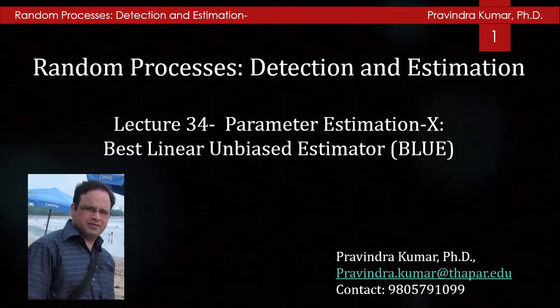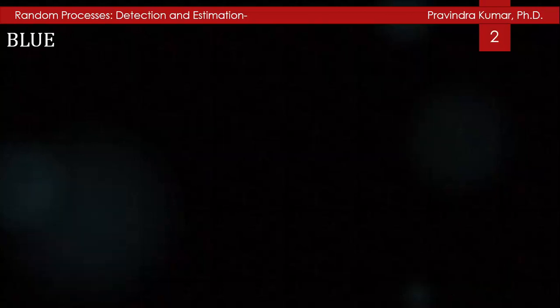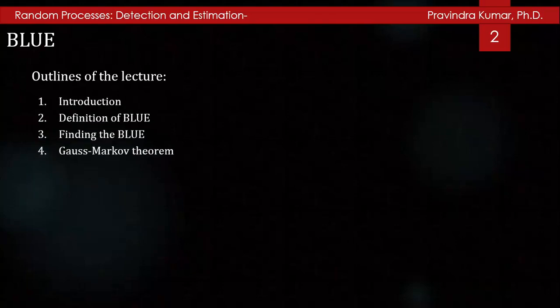Welcome to the lecture series of Random Processes, Detection and Estimation. This is the 34th lecture of this series. In the previous lecture, we discussed the Rao-Blackwell-Lehmann-Scheffe theorem and Neyman-Fisher factorization theorem with vector parameters to find MVU. In this lecture, we will discuss the best linear unbiased estimator (BLUE), and the outline includes: definition of BLUE, finding the BLUE, and the Gauss-Markov theorem.